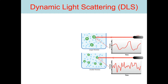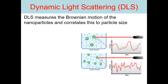DLS stands for Dynamic Light Scattering spectroscopy. What does DLS actually do with the sample? DLS basically measures the Brownian motions of the nanoparticles and correlates this to the particle size. This is the typical setup for DLS — we have a laser source that puts light on the sample, and that light is scattered by the molecules of the particles, which is then carried to the computer to plot a graph of intensity versus time.